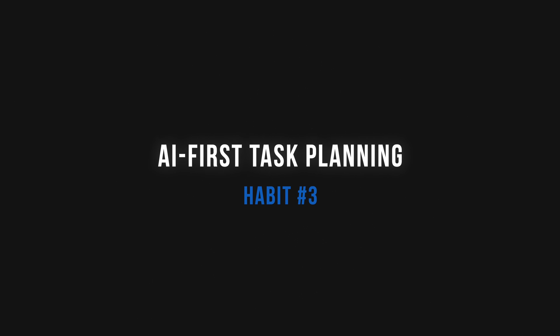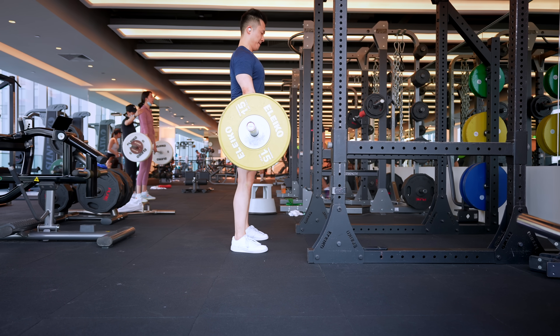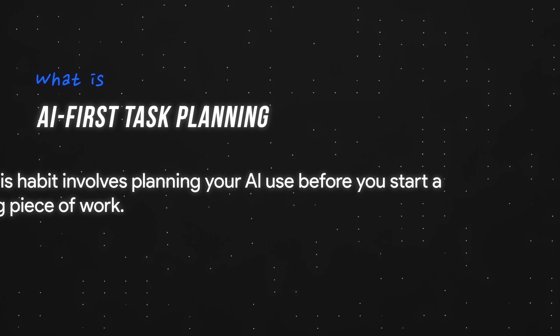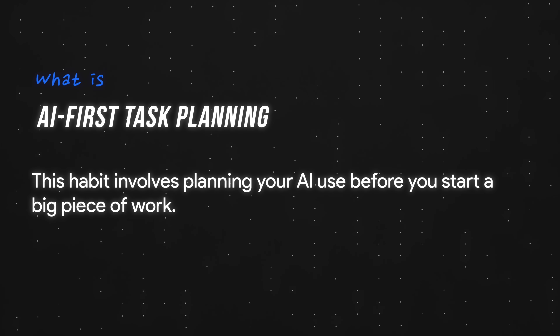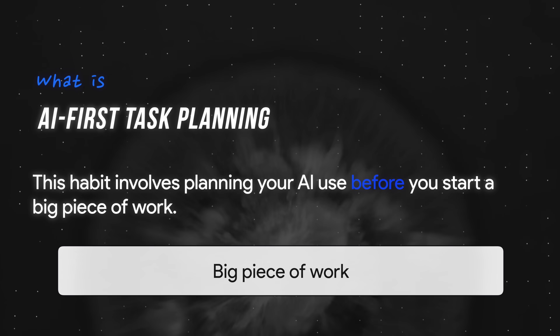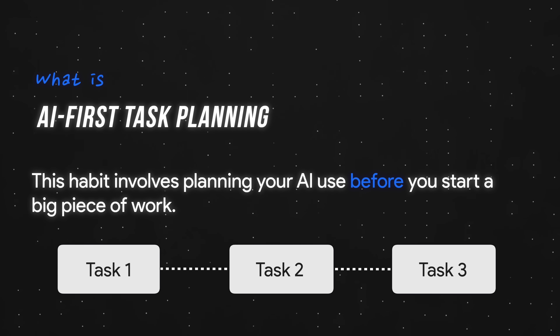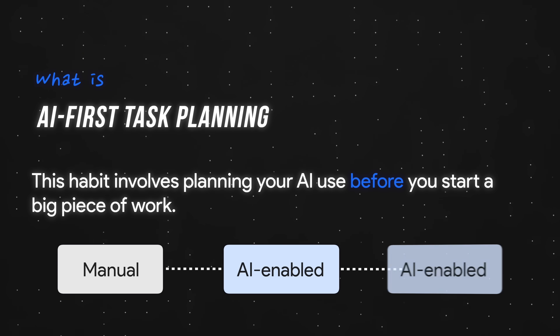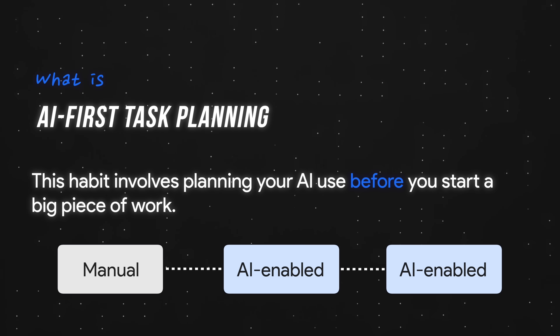Number three: AI-first task planning. Heads up, this habit is probably the hardest to maintain consistently, but just like going to the gym, it will make a massive impact over the long run. Put simply, this habit involves planning your AI use before you start a big piece of work — breaking down complex projects into small concrete tasks, then marking the ones AI can and should help with.